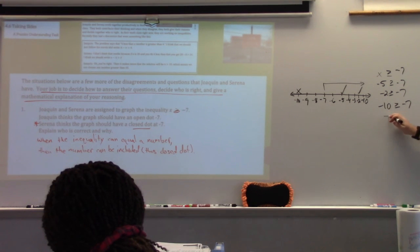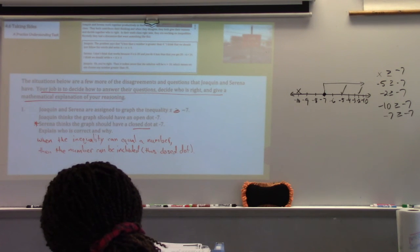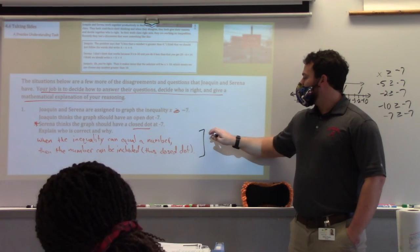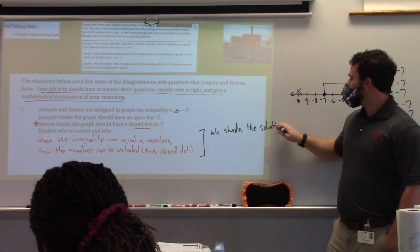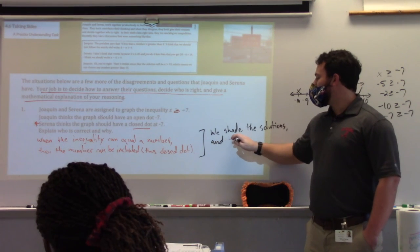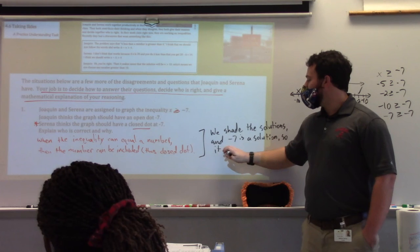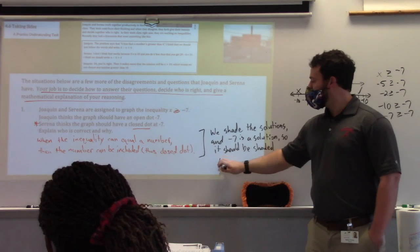Notice how everything that we're shading makes the inequality true. What about negative 7? Equal to. It'd be equal to. So does it make the inequality true? Yes. So I need to shade it. So would that be an open point or a closed? Closed. Do you see how the idea of an open versus closed point is the same idea as shading? Meaning, what makes the inequality true? What are my solutions? Does that make sense? And that's a detail I would probably add here. We shade the solutions. And negative 7 is a solution. So it should be shaded. A closed point. Does that little extra detail help it make a little bit more sense? You good with those ideas?